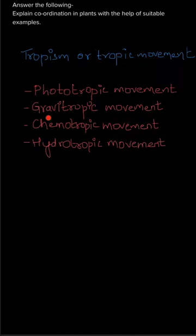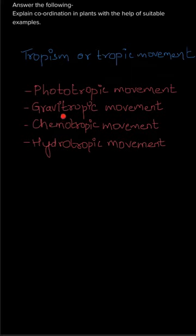Next, we have gravitropic movement, which is movement in response to gravity. The example is the growth of the root system — roots grow along the direction of gravity, meaning they grow downwards. The shoot, however, grows against gravity, showing a negative response to gravity, while the root shows a positive response. So the growth of the root system is the example for gravitropic movement.